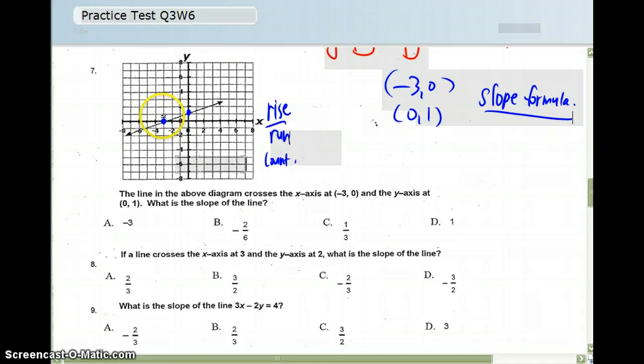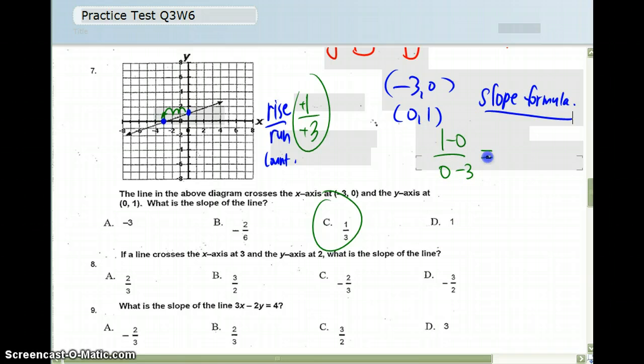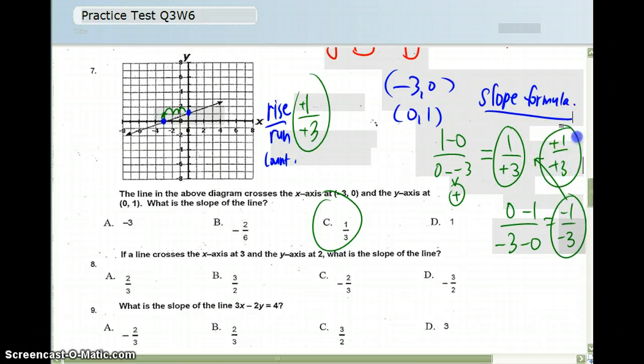Here it would be an easy counting 1 up, so that's positive 1, and then counting 1, 2, 3 to the right, positive 3. And there would be my answer. If you use the formula, you could have had 1 minus 0 over 0 minus negative 3, which is 1 over 3. Or you could have had 0 minus 1 and negative 3 minus 0, which is negative 1 over negative 3. And this is the same as positive 1, positive 3, because two negatives make a positive, so you'll still get 1/3.